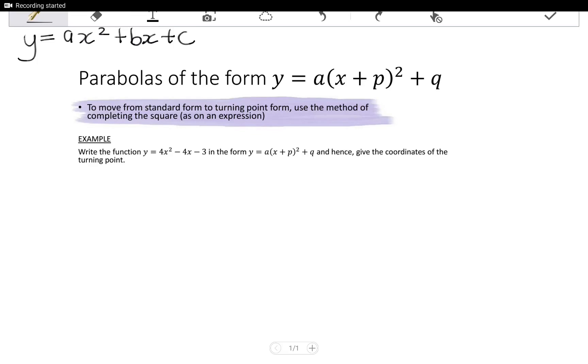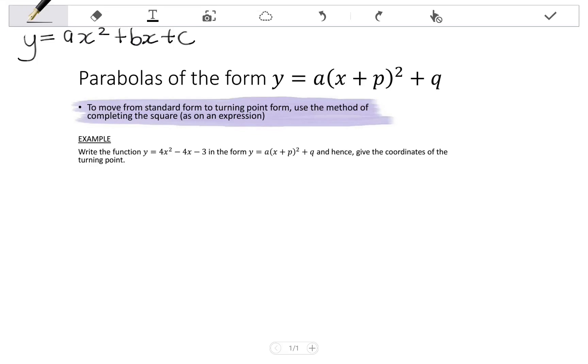In this video, we look at writing parabolas in the form y equals a times x plus p all squared plus q, which is known as our turning point form.